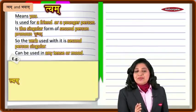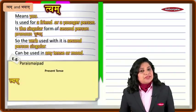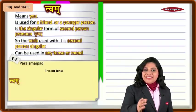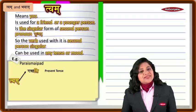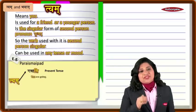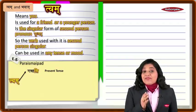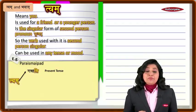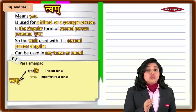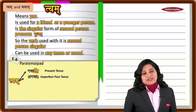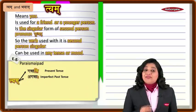Let us take an example of twam with a parasmaipada dhatu like gam — gaccha — meaning 'to go.' In present tense: 'twam gacchasi,' meaning 'you are going.' In imperfect past tense: 'twam agacchas,' meaning 'you went.'